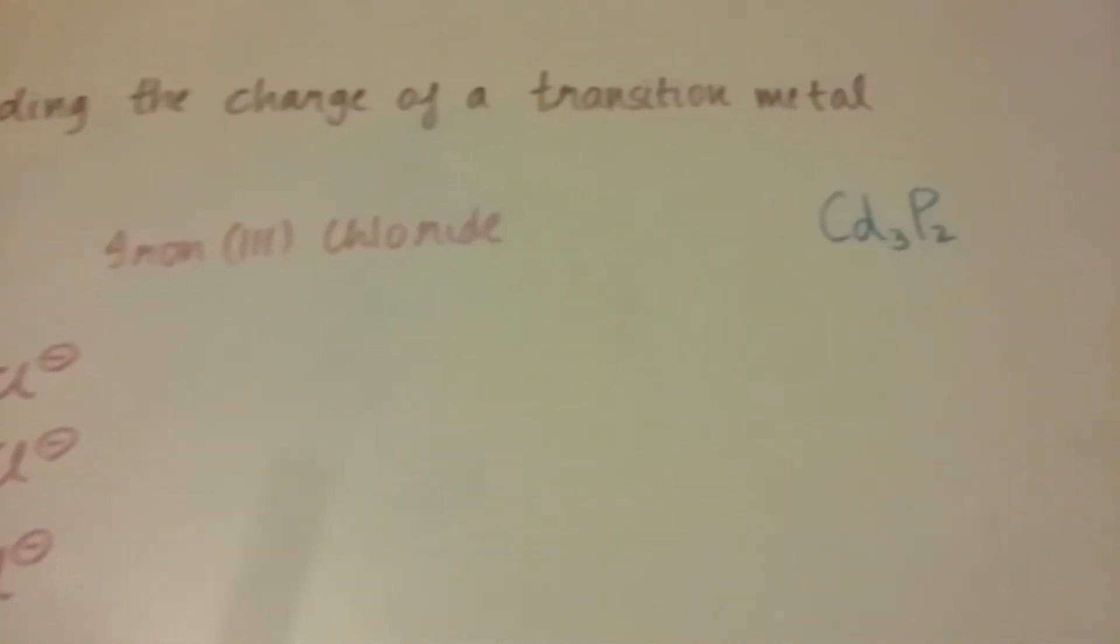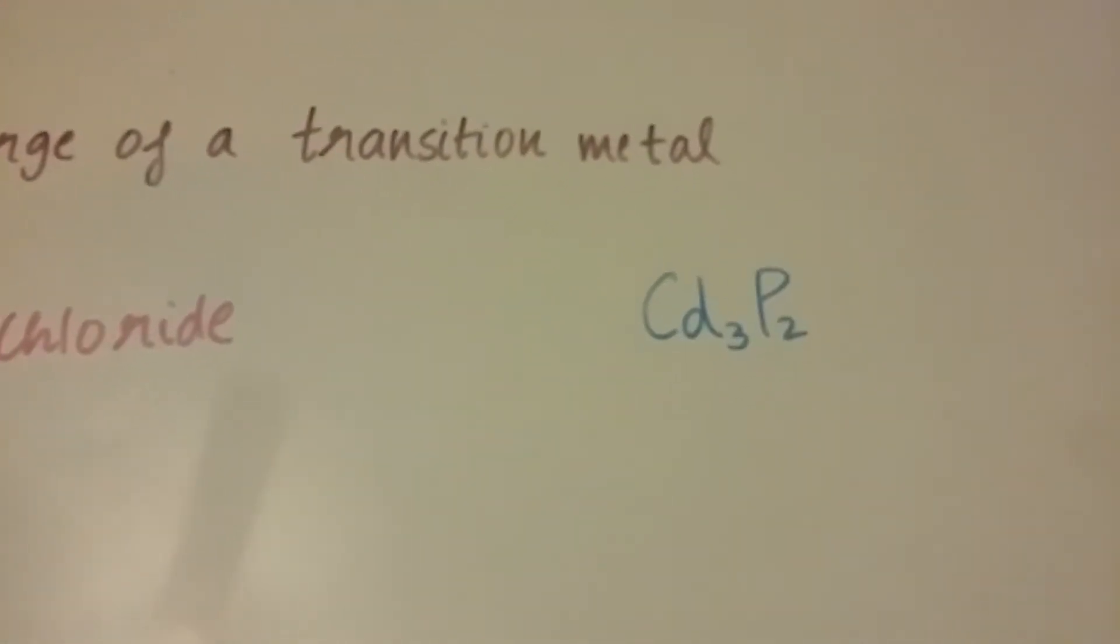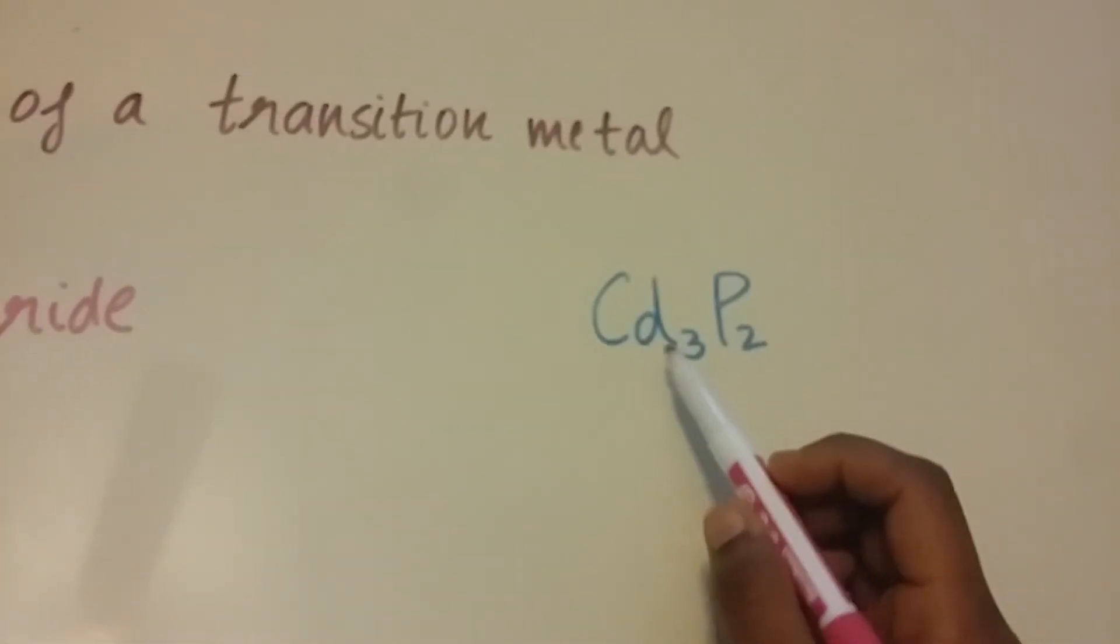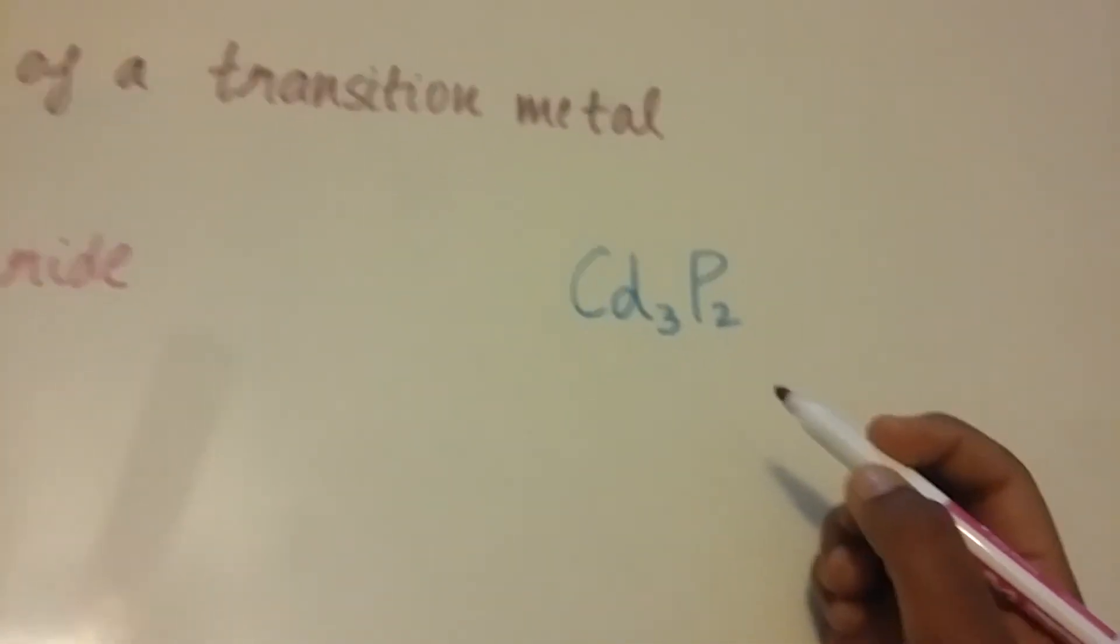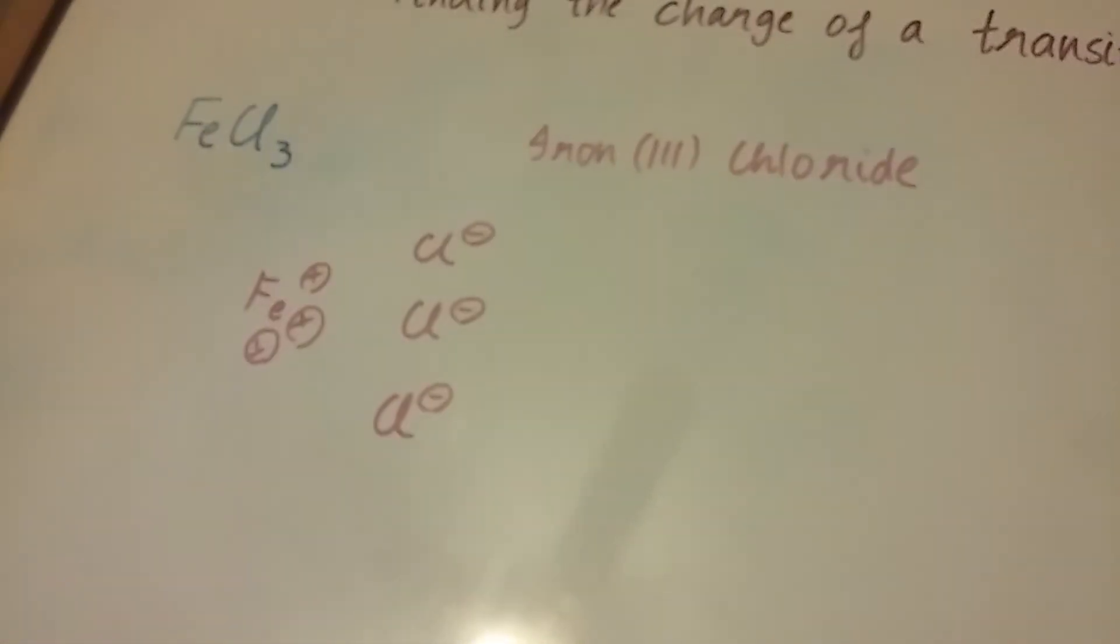So our next example is cadmium and phosphorus. Cadmium is another transition metal. So if we use the same procedure that we used over here, then the subscript says that there's three cadmium atoms.